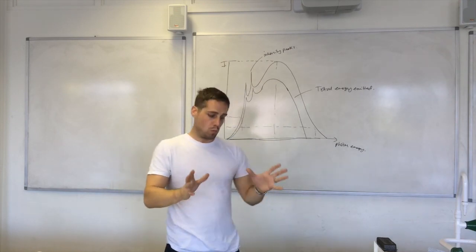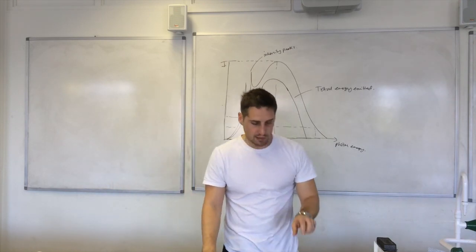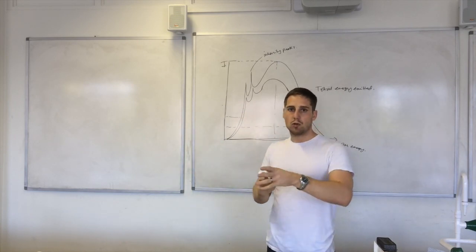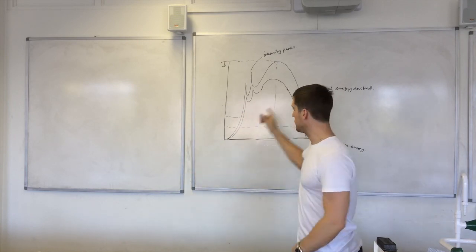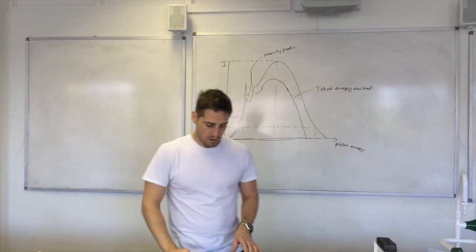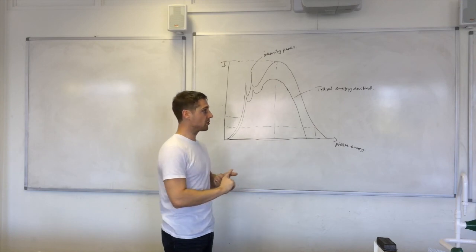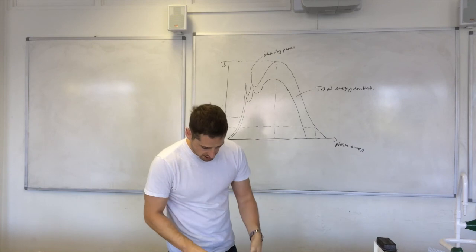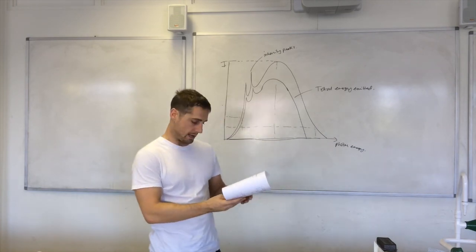So the D1 task is asking you to relate how you operate the tube and how you design the tube to the spectrum that you get. So you're going to need to draw the spectrum for different changes that you can make. So the changes that you'll need to include, they're on the handout.